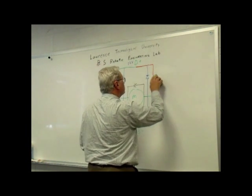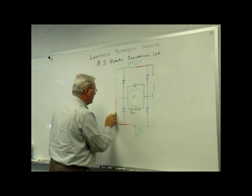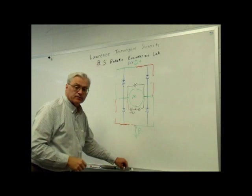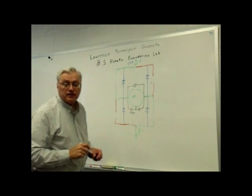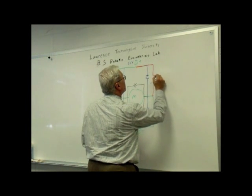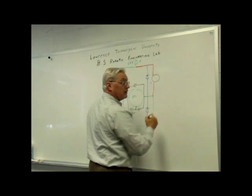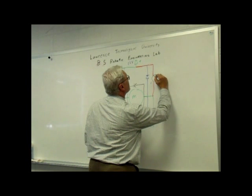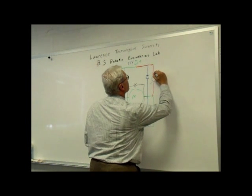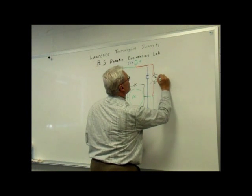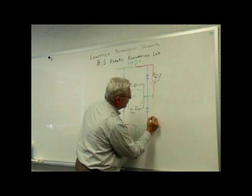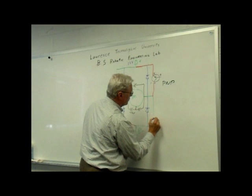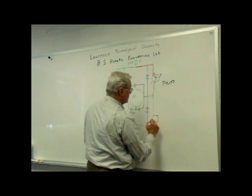Another alternative is to substitute some solid-state devices — basically some transistors. If we put a transistor up here, we'll put a PNP. This is the emitter, collector, and base. And down here we can put an NPN transistor.